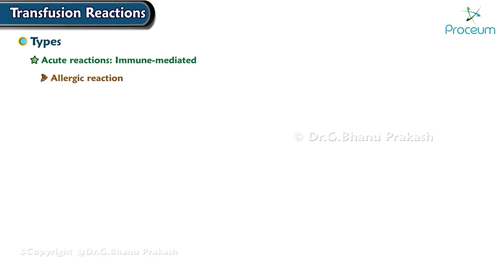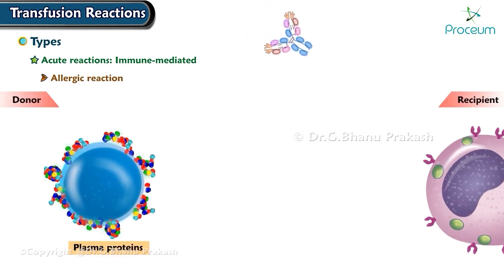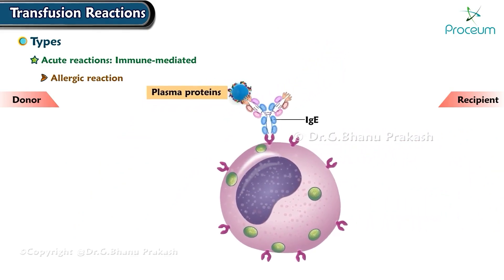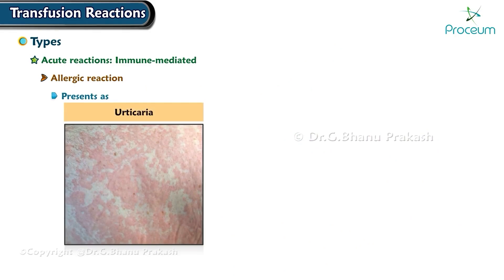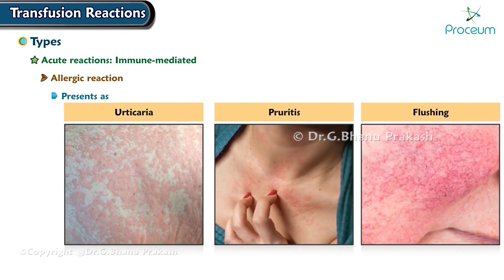Allergic reaction occurs due to the reaction of donor plasma proteins with the recipient's IgE, initiating release of mast cell mediators. It presents as urticaria, pruritus, and flushing. Use of antihistamines prior to transfusion is advised to avoid this complication.